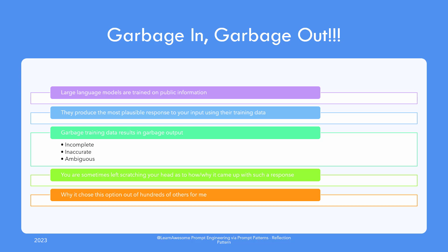What was the rationale, and what kind of assumptions were involved in generating that output? A simple example: if you ask it to suggest a hotel in a city you are visiting and you get a sharp crisp response — 'the Plaza Hotel' — wouldn't you be left scratching your head as to how and why it picked this one out of dozens, if not hundreds, of options, and whether it suits you or not?